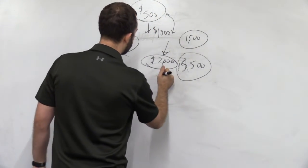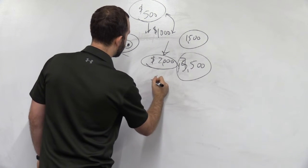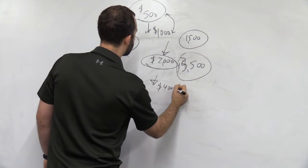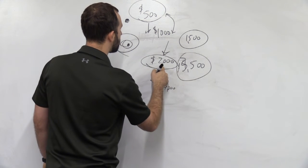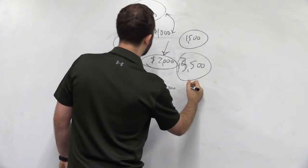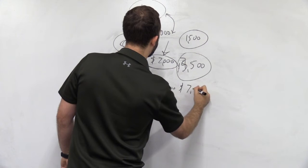And then from here, we can grow that. We can say, how can I make an extra $4,000 a month on top of this? Then from here, we're at $7,500.